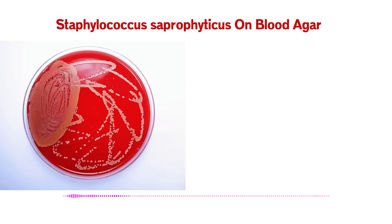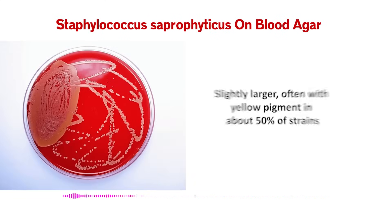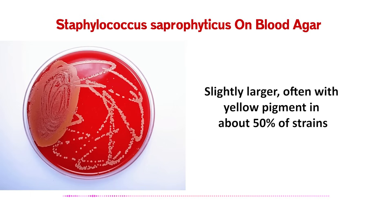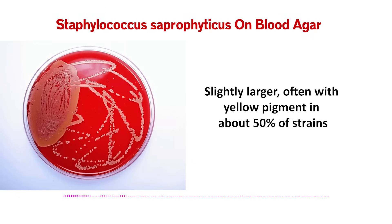What about S. saprophyticus? This is a huge visual clue, especially if you're working with urine cultures. S. saprophyticus colonies are often a bit larger than S. epi, and the big thing is about half the strains — maybe 50% — produce a noticeable yellow pigment on blood agar. So if you see a staph from a urine sample on SBA and it has a yellowish tint, you should immediately be thinking S. saprophyticus. That pigment is a great shortcut.